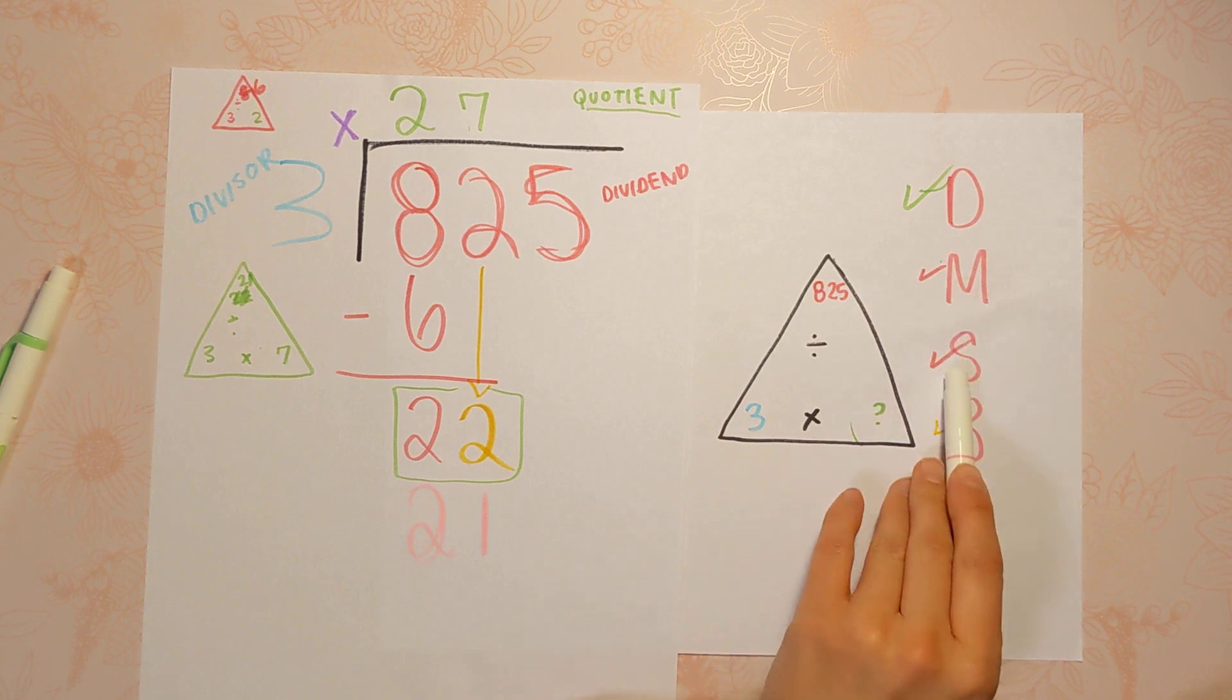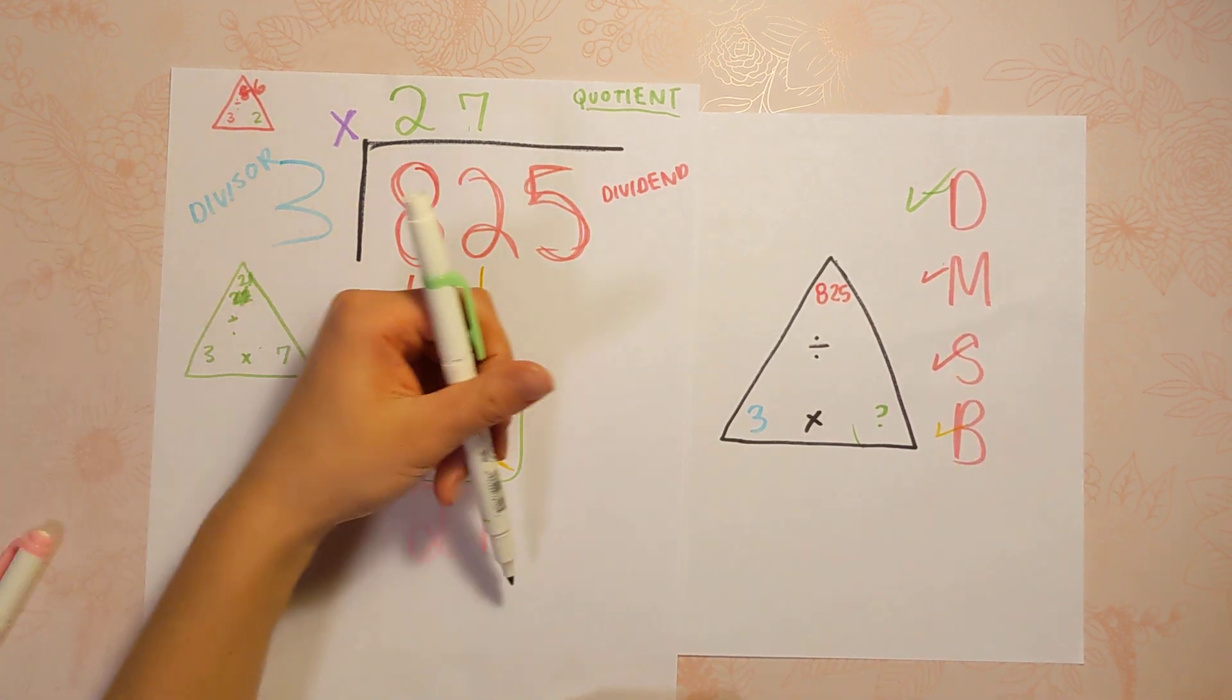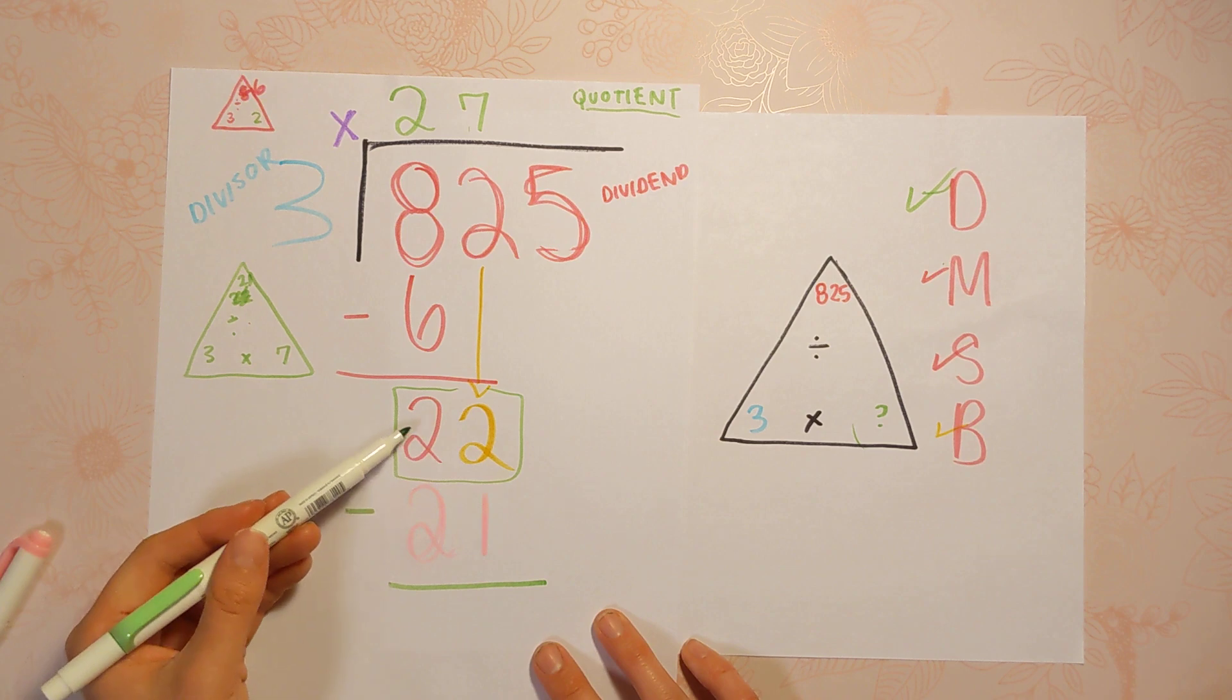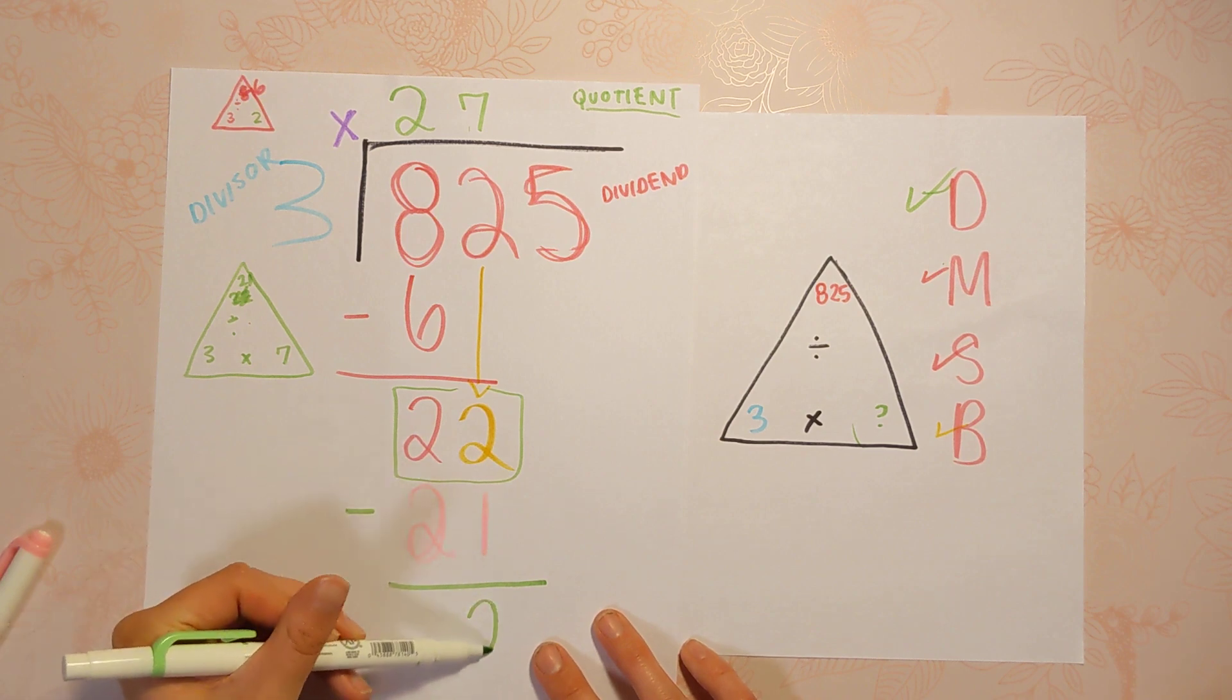That was this step. Now we're going to subtract. So we're going to figure out our remainder here. 21 minus 22 minus 21, excuse me, is 2.